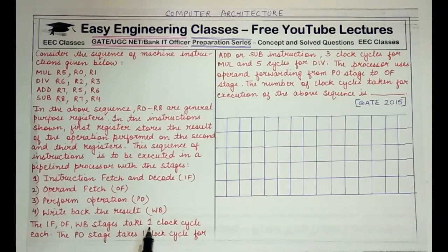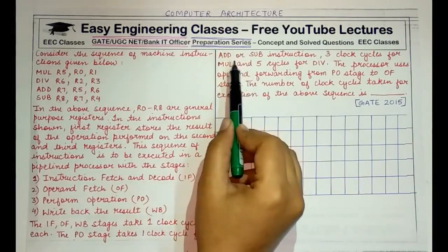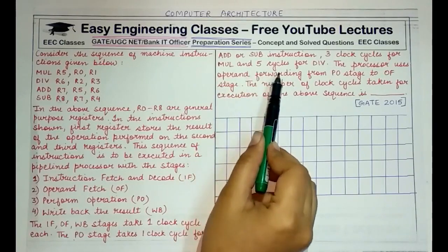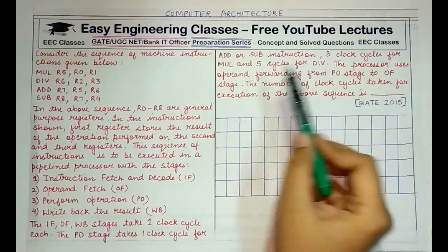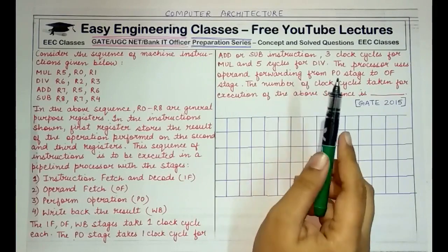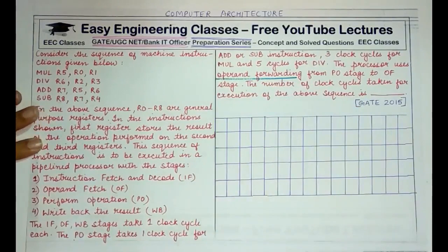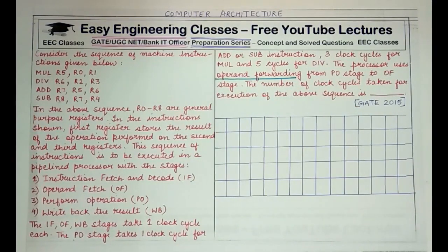IF, OF, and WB each take one clock cycle. The perform operation (PO) stage takes one clock cycle for add or subtract, three clock cycles for multiply, and five cycles for division. The processor uses operand forwarding from the PO stage to the OF stage. The question asks for the total number of clock cycles taken for execution of the above sequence.